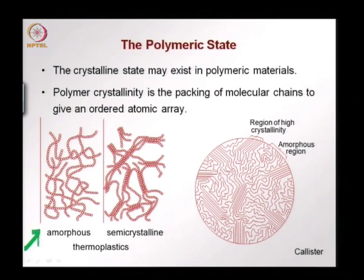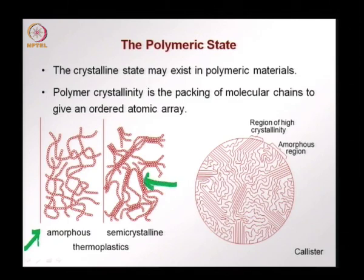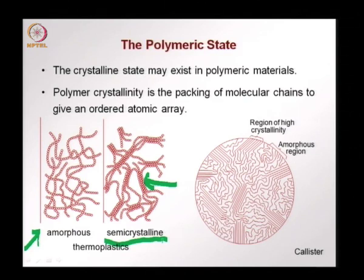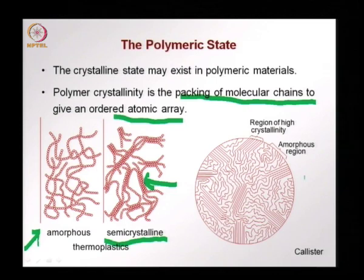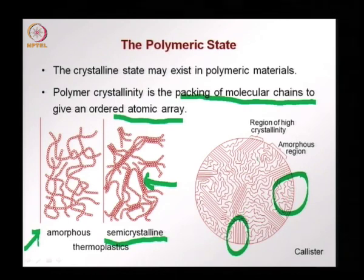Thermoplast polymers can occur in an amorphous state with disordered, entangled chains, or they can be crystalline to some extent — this part orderly, with chains closely packed together, while the rest is amorphous. That is why it is called semi-crystalline, or partly crystalline. In the same polymer, you can have an amorphous region and also a crystalline region, and the proportions between these two determine the degree of crystallinity of the polymer.